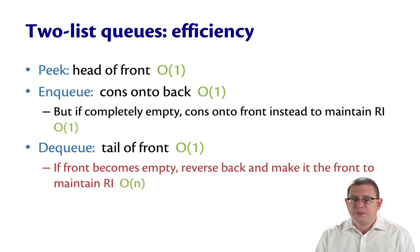What about dequeue, though? As we just reminded ourselves, normally that's a constant time operation, because we're just taking the tail of the front. But in that rare case that the front becomes empty, we've got to do something expensive. We have to reverse the back and make it be the front.